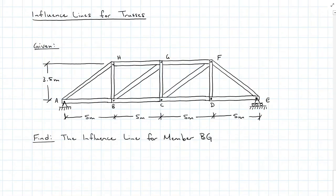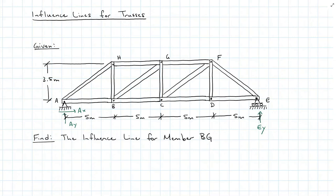Can we do influence lines for trusses? Absolutely. Here is my truss. I'm going to start with a whole free body diagram with A_X, A_Y, and E_Y. Instead of looking for connectors — which would work exactly like a beam — we're actually looking for influence on a member. In this case, member BG. So if I do a section here, I can go to the left and get my reaction A_Y from the load, then sum forces in the Y direction to get my internal force BG, and work my way across the truss to get the influence line for that member.